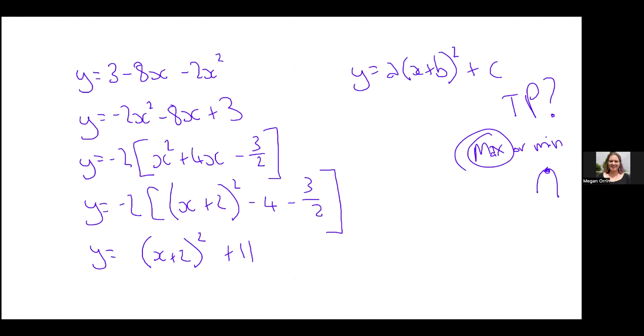This is 8 over 2, right? 8 minus 3 is negative 11. Negative 11 over 2. And then I have to multiply it by negative 2. So that cancels out the bottom. So I get 11. So what is my turning point? Minus 2, 11. Change the sign of this and then keep this. That's my turning point.